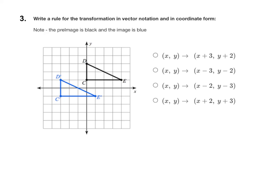For question number three, we want to go the other direction. This time, it gives us the graph of the pre-image and the image, and we want to come up with the rule for the transformation in vector notation and in coordinate form.